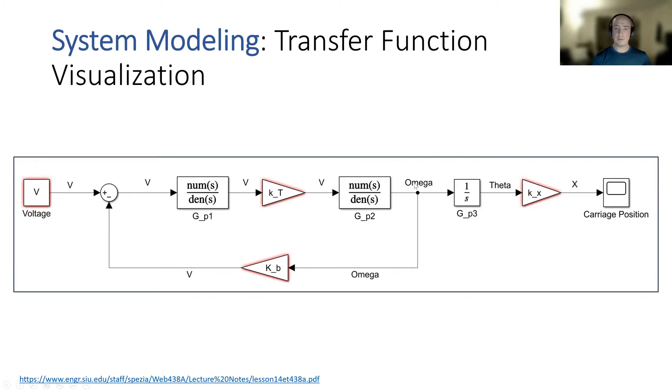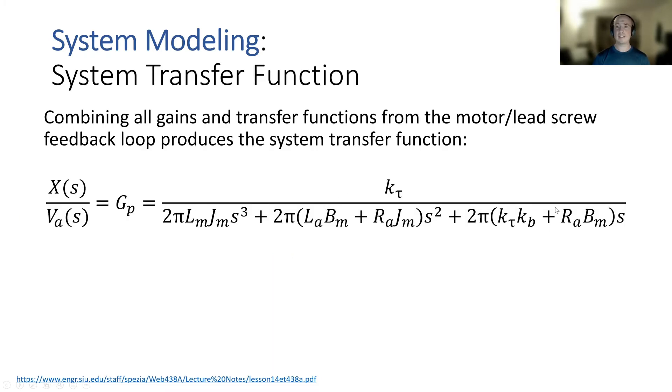So after you have your rotational velocity, that gets transformed into a motor position and then therefore carriage position. And again, even all of that is rather unwieldy. So what we're going to do is combine all of those transfer functions into one final system transfer function, and that's what we have here.